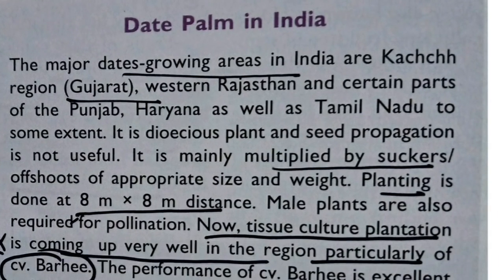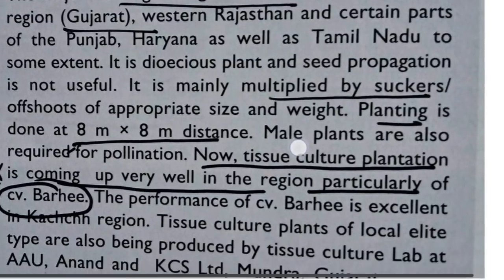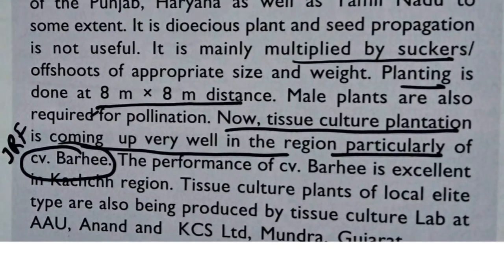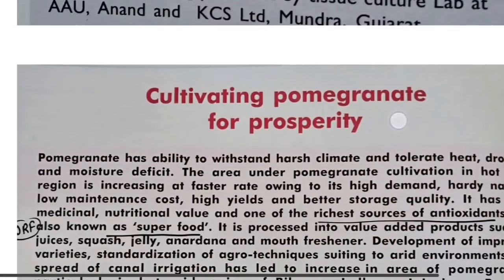For Date Palm, the key points are: it is propagated by suckers or offsets, spacing followed is 8m × 8m, and the important variety Barhi is now propagated through tissue culture technique.